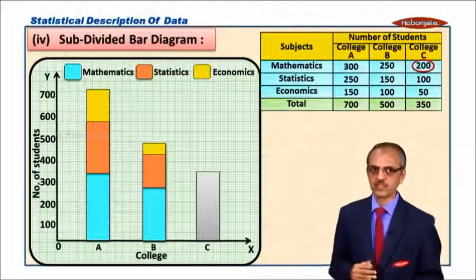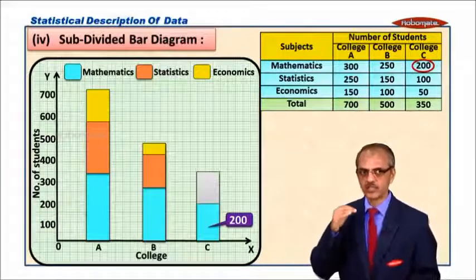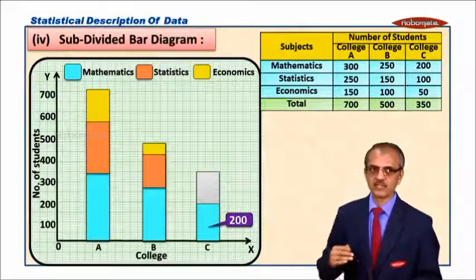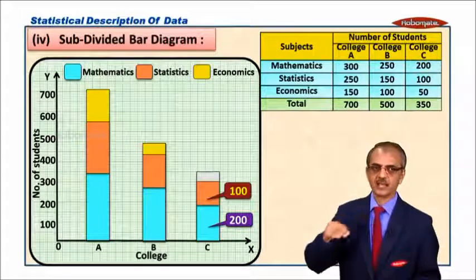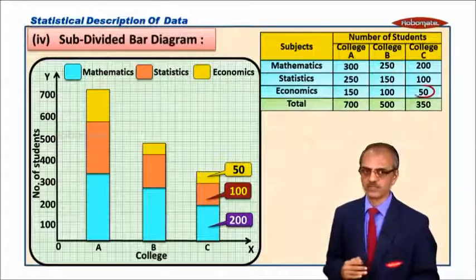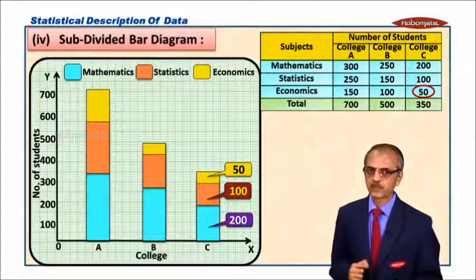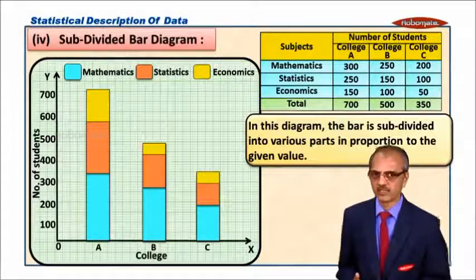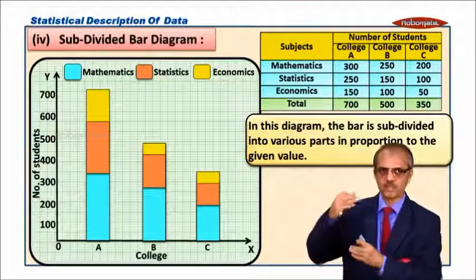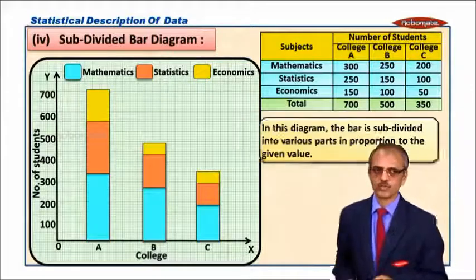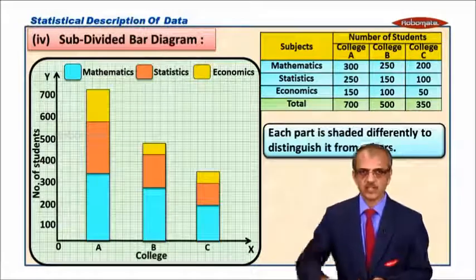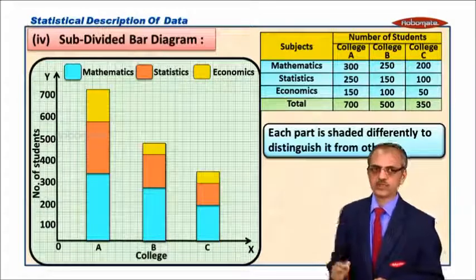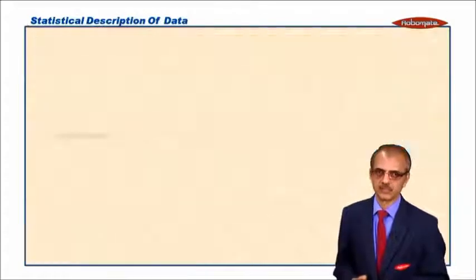And for college C also we consider the same way. Total is 350, maths students are 200, stats students are 100, and the remaining students for economics is about 50. Now what is the important point? In this diagram the bar is subdivided into various parts proportional to the given value. The second point is each part is shaded differently to distinguish it from others.